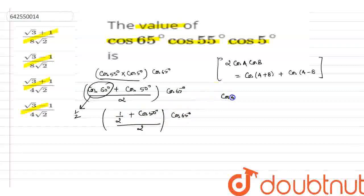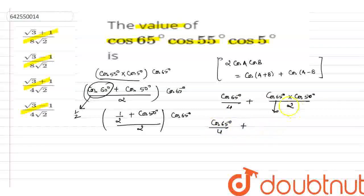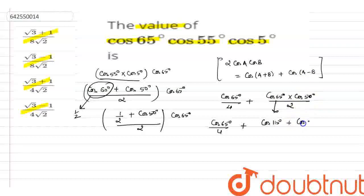Multiplying through by cos(65°), this becomes cos(65°)/4 plus cos(65°)·cos(50°)/2. Applying the product-to-sum formula again on cos(65°)·cos(50°) gives cos(15°)/4.